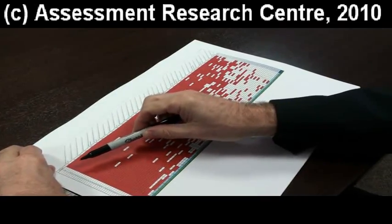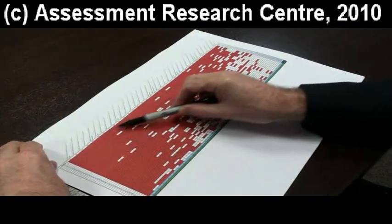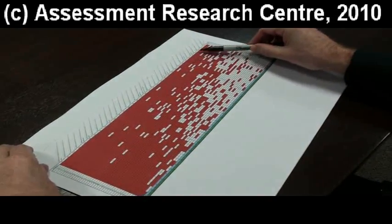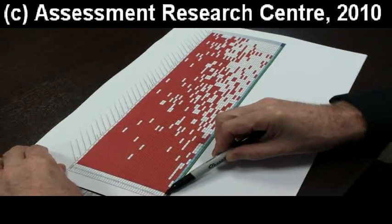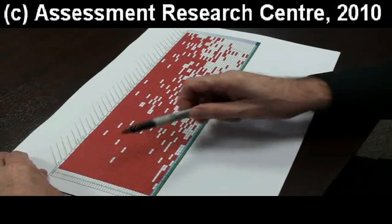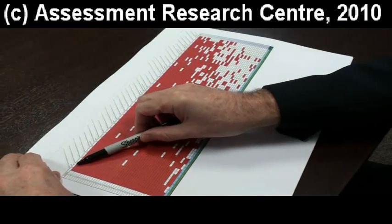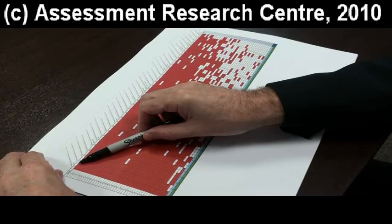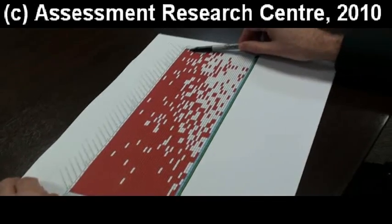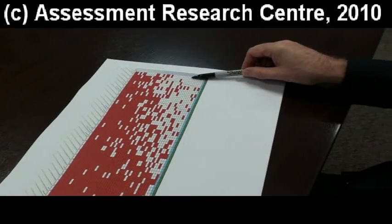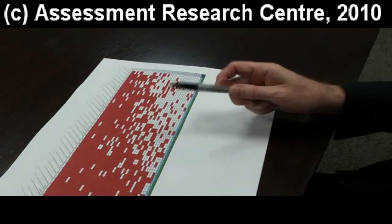These have already been sorted so that the students at the top here are those who've got most if not all of the items correct and the students at the bottom are the ones who've got the least items correct. The questions over here on the left hand side are those that have got most students with the correct answer and the ones on the right hand side are those with the least number of students with the correct answer.